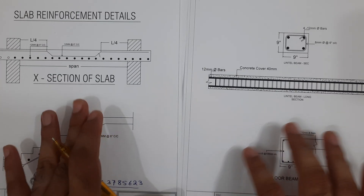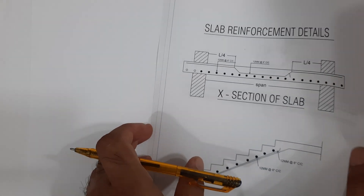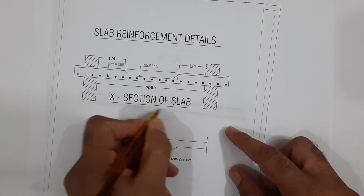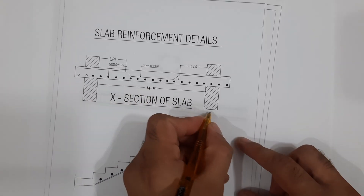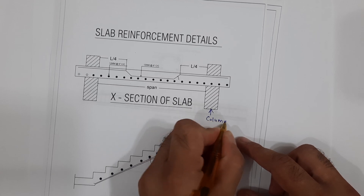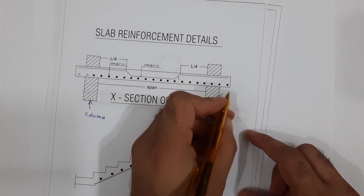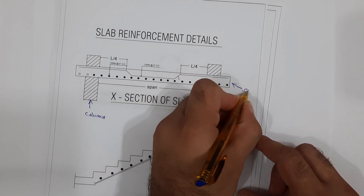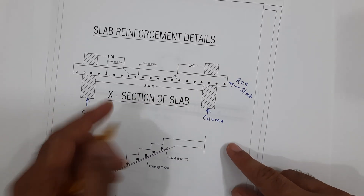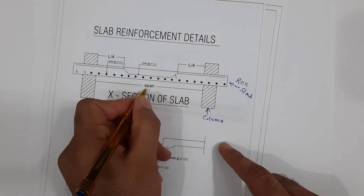First of all, I will guide you for slab reinforcement details. You can see here this is the cross-section of the slab. This is one column and this is the other column — these are supports for this RCC slab. The span between the two columns is, for example, 20 feet.